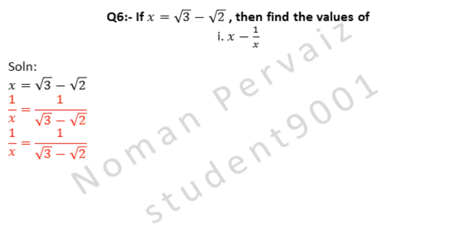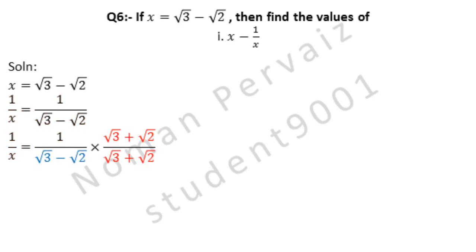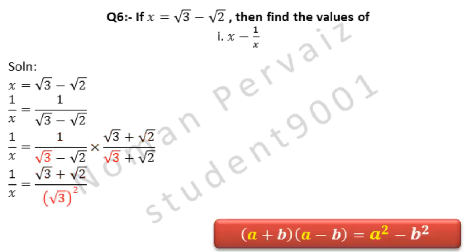We are taking the value of 1 over x as it is. Next we will multiply and divide by the conjugate of the denominator. The denominator, indicated in blue color, is under root 3 minus under root 2. Its conjugate will be under root 3 plus under root 2. We apply the formula: (a + b)(a - b) = a² - b², where a is under root 3 and b is under root 2.